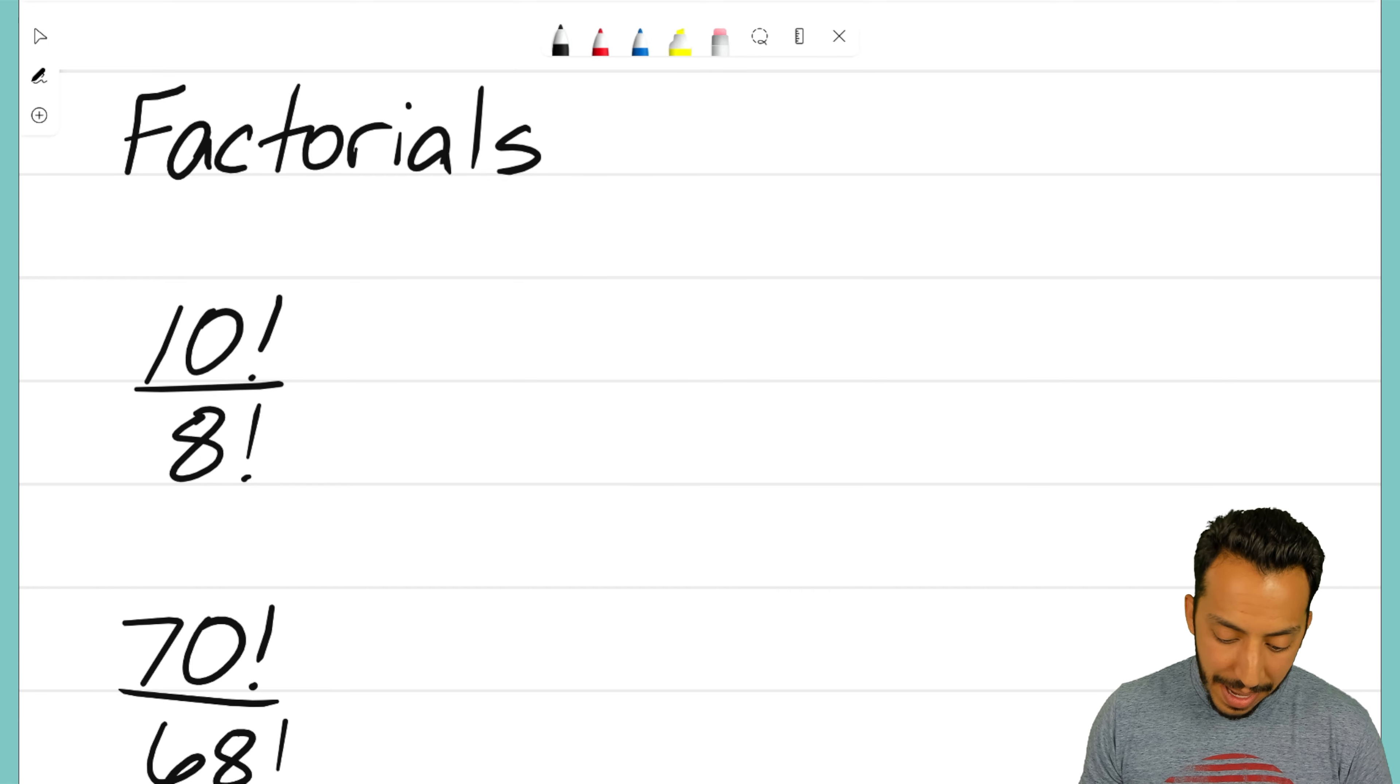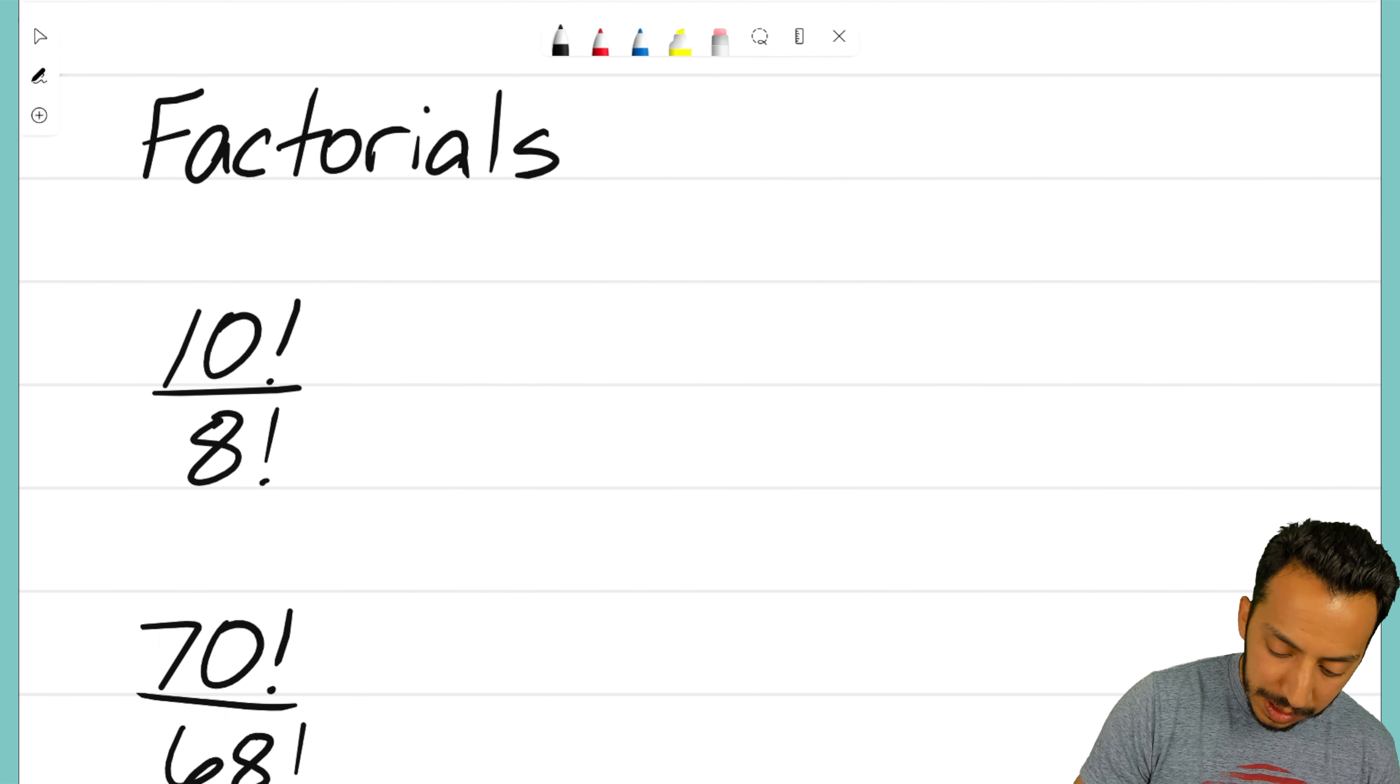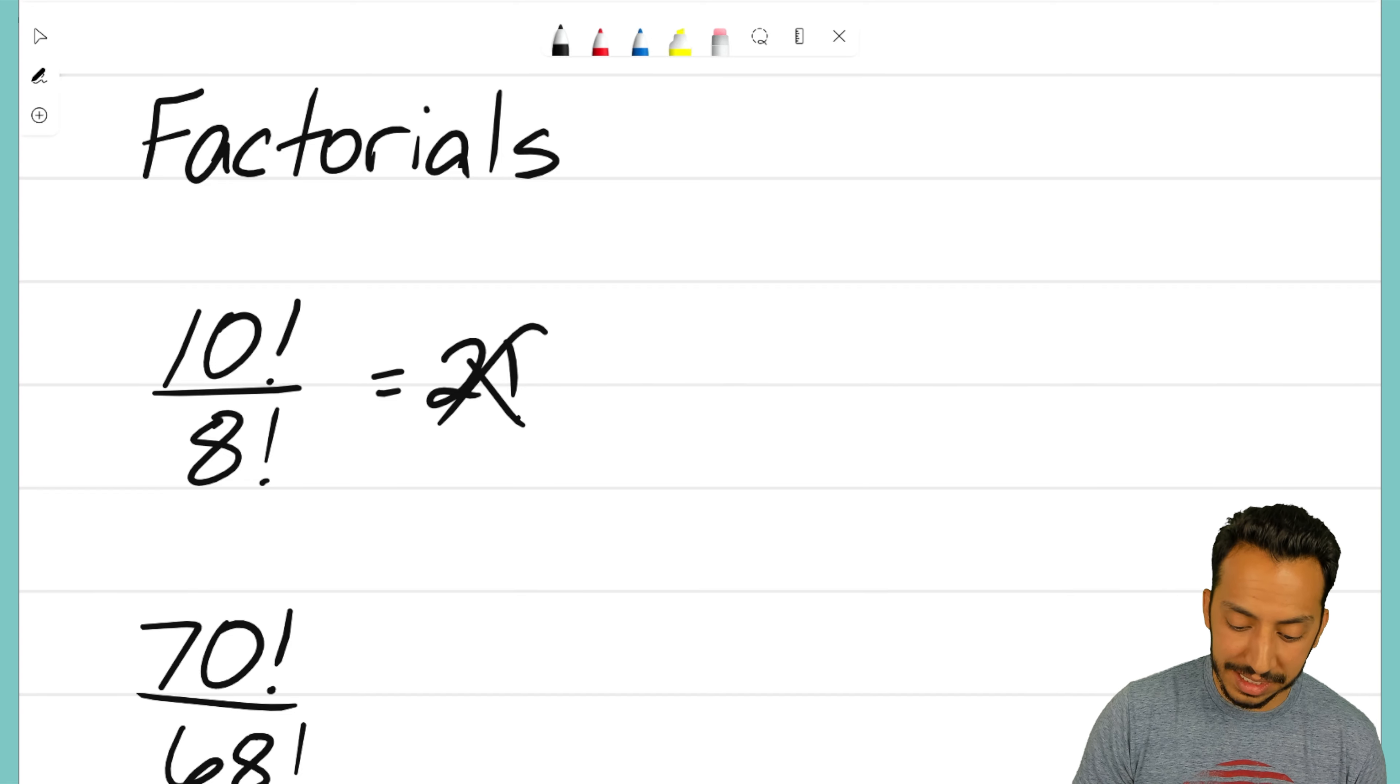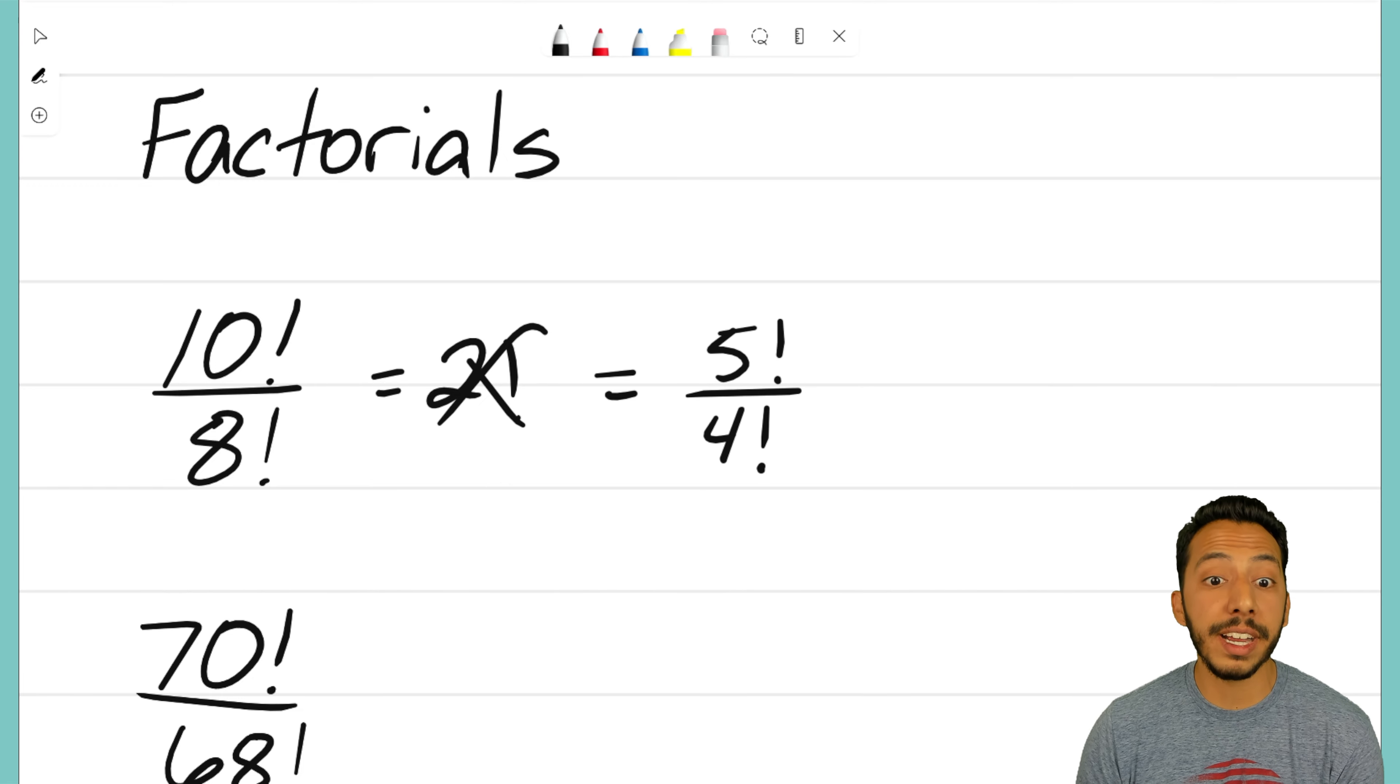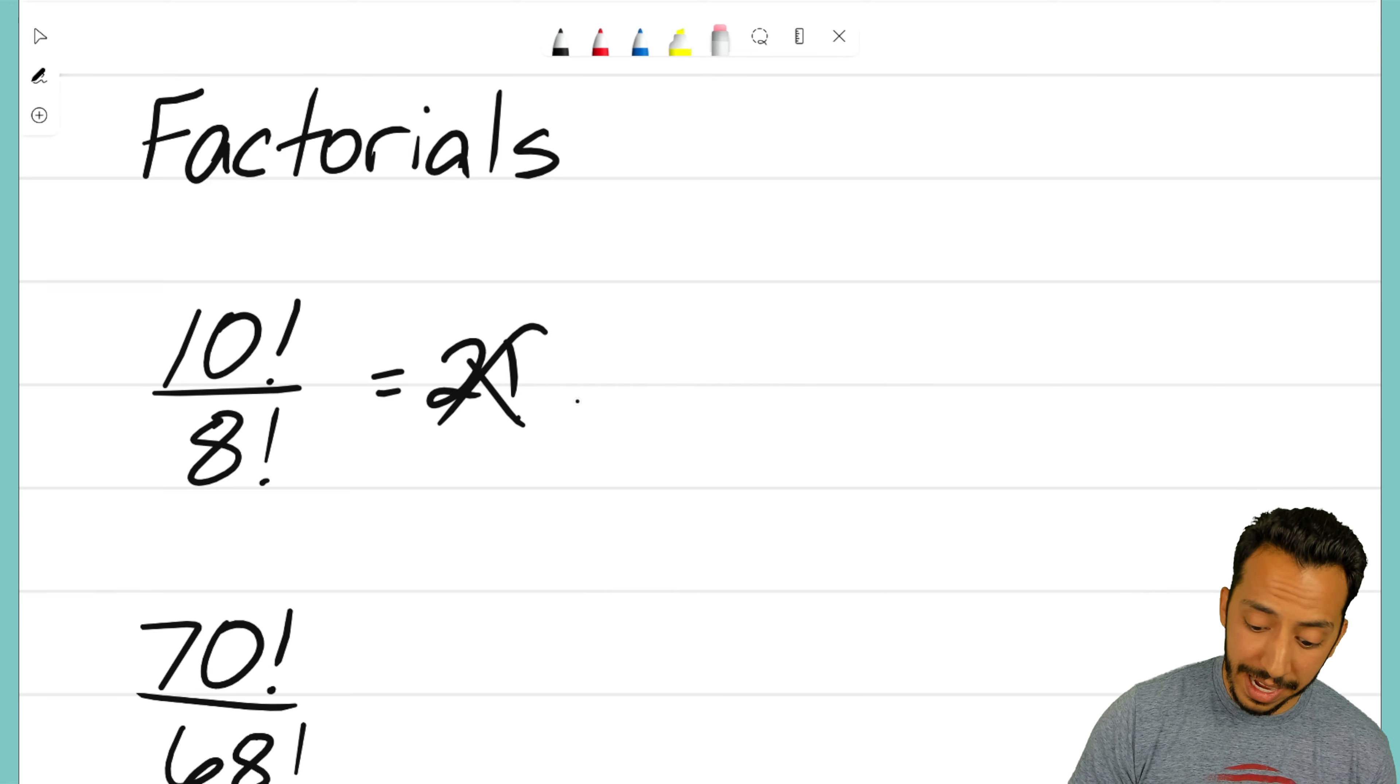I know what some of you might be thinking—maybe 10 factorial over 8 factorial just becomes 2 factorial? Well no, that's not the case. Or maybe we can simplify that fraction to 5 factorial over 4 factorial because that's what 10 over 8 reduces to? No, that's not the case either.